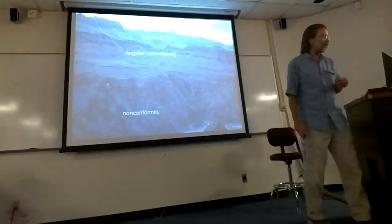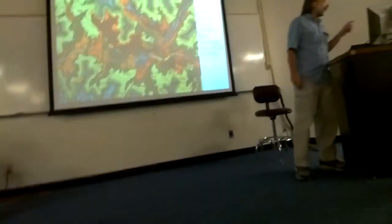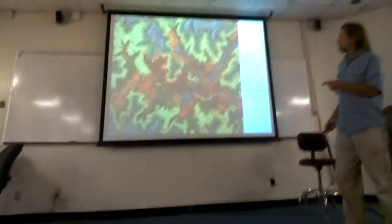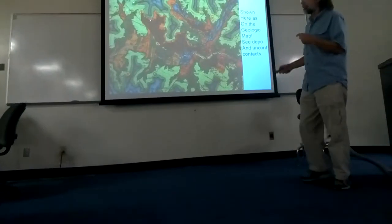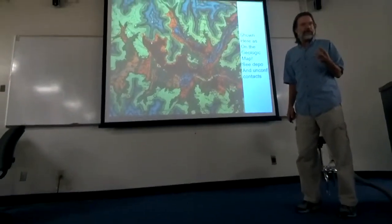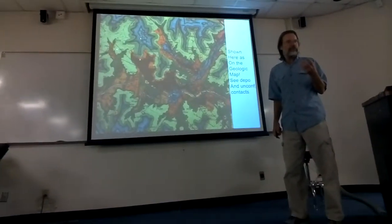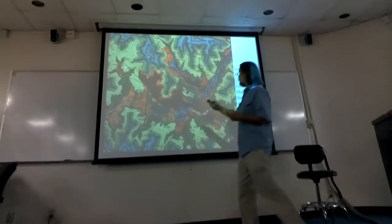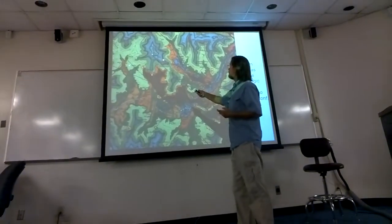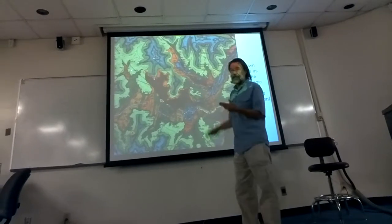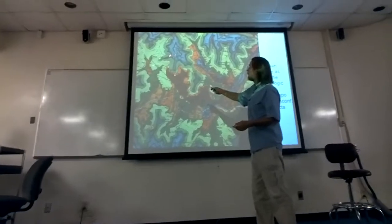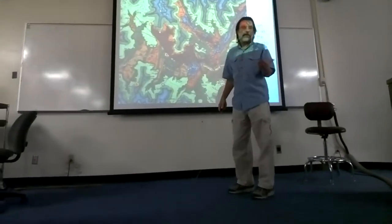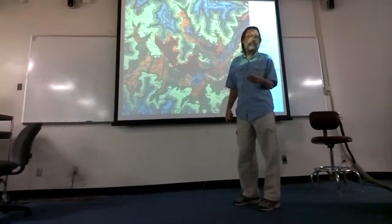Unconformity, angular unconformity, and disconformity. On a geologic map, it's important to realize that unconformities can have different patterns. For example, the contact between Mississippian rocks and Cambrian rocks is an unconformity, but that contact is parallel to the other depositional contacts. Hence, it's a disconformity.